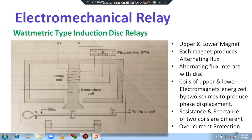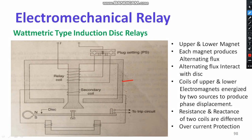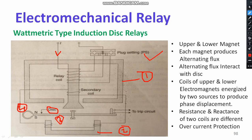If I talk about wattmetric type induction relay, there are two magnets: number one, the upper magnet, and number two, the lower magnet. At the middle, you keep the aluminium disc — number three. Number four, you can see a braking magnet in a circular shape. Operating current is passing here, and we have the flux setting. As soon as current passes through the relay coil, flux phi-1 is generated.